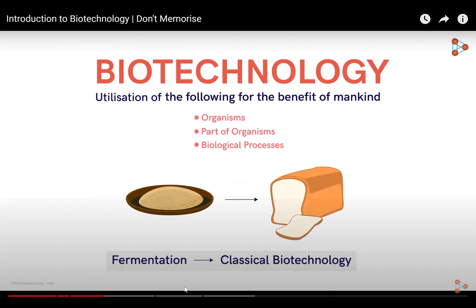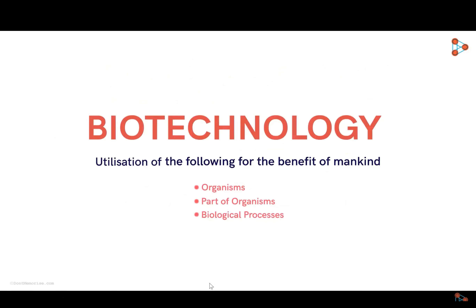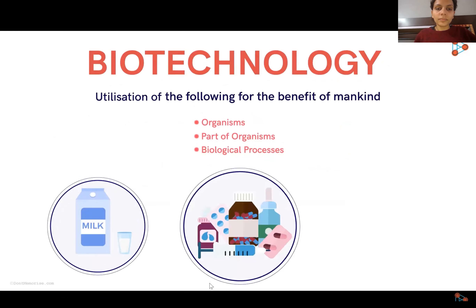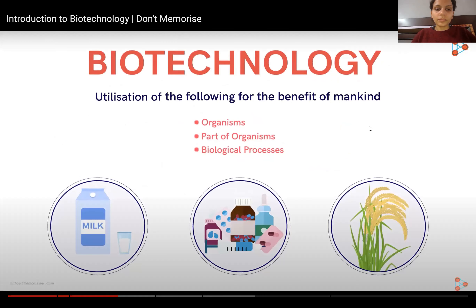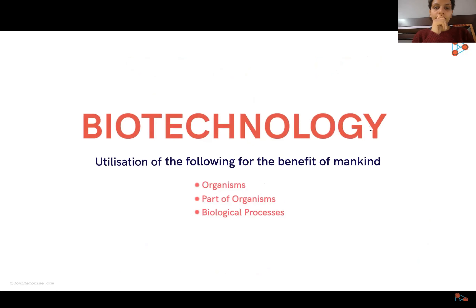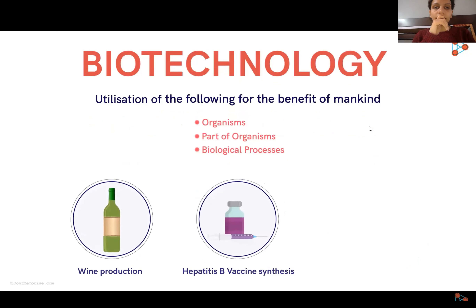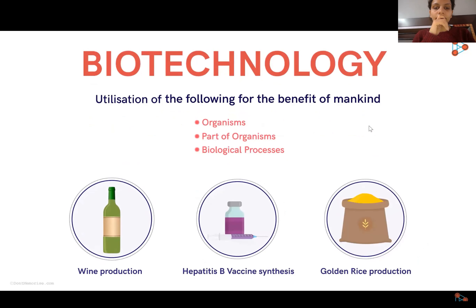Obtaining products for human benefit — like food items, medicines, hybrid crops, and so on — are all possible due to biotechnology. There are numerous applications of biotechnology. Let's have a look at a few examples to understand how wide the field is, and understand how an organism or a part of it or some processes can be used to harvest important products for mankind. Let's take examples of wine production, hepatitis B vaccine synthesis, and golden rice production.